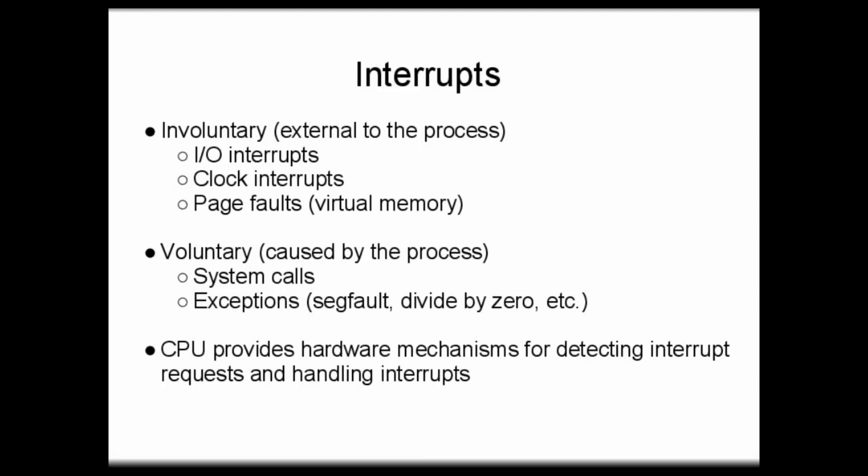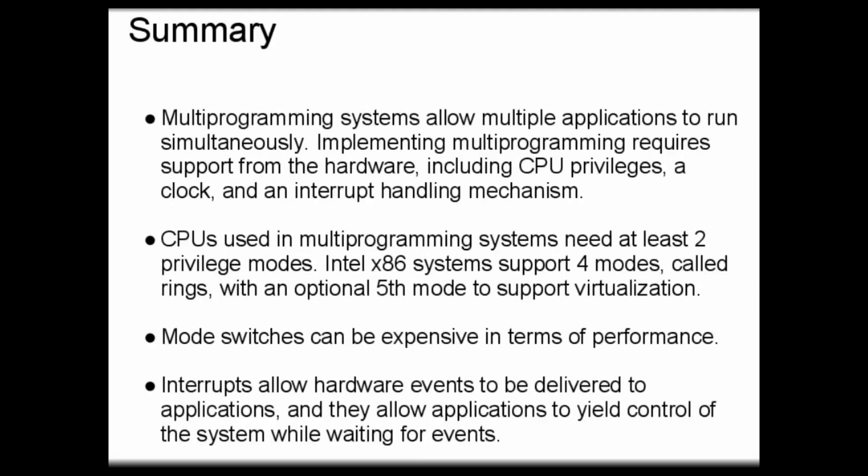The CPU provides hardware mechanisms for detecting and handling interrupts. In summary, multiprogramming systems allow multiple applications to run simultaneously. Implementing multiprogramming requires support from the hardware — in particular, we need CPU privileges, a clock, and an interrupt handling mechanism. CPUs used in multiprogramming systems need at least two privilege modes; Intel x86 systems support four or five modes depending on the processor. Mode switches can be expensive in terms of performance, so we don't want to do them more than necessary. Interrupts enable hardware events to be delivered to applications and allow applications to yield control of the system while waiting for events or services.